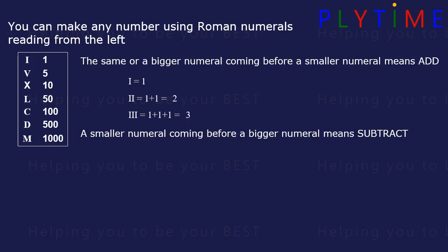A smaller numeral coming before a bigger numeral means subtract. IV is 5 minus 1, that's 4. V is 5, VI is 6, VII is 7, and VIII is 8.